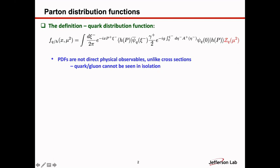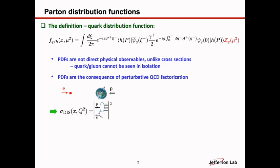One very important thing to emphasize is that parton distribution functions, although we talk about them all the time, are not direct physical observables. They're different from cross sections. When you have a cross section, you measure it in experiment — that's what you measure. But you never directly measure the parton distribution in any given experiment, because that's the consequence of color confinement. You cannot see quarks and gluons carrying color; they cannot be seen in isolation.